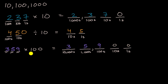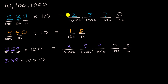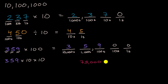Another way to think about it: 359 times 100 is the same as 359 times 10 times 10. Every time you multiply by 10, you shift digits one place to the left. So multiplying by 10 twice shifts all digits two places to the left, which is exactly what happened. So based on that, what do you think? If I were to take 75,000 and divide it by 100, what do you think this is going to be? Pause the video and see if you can work through it on your own.